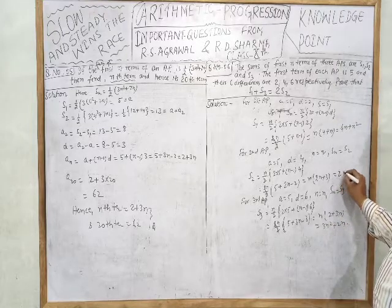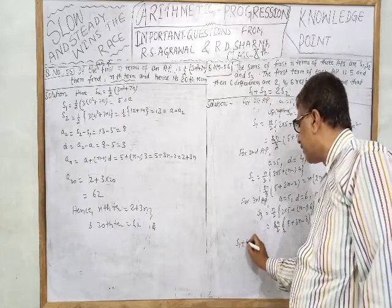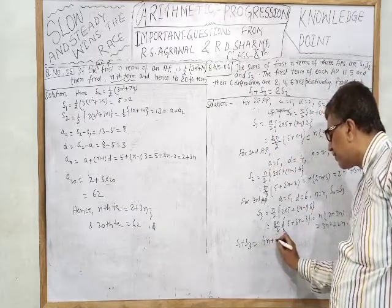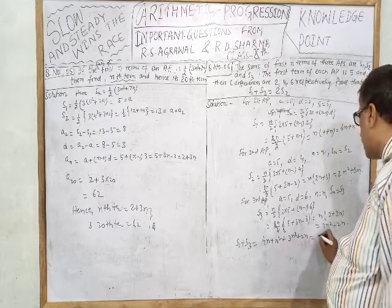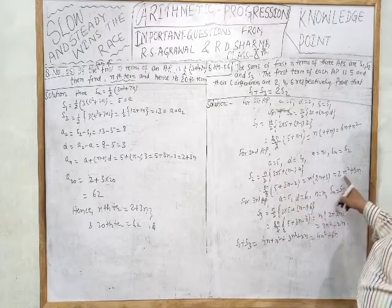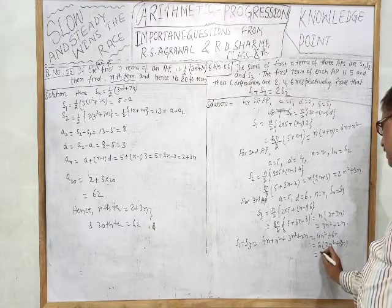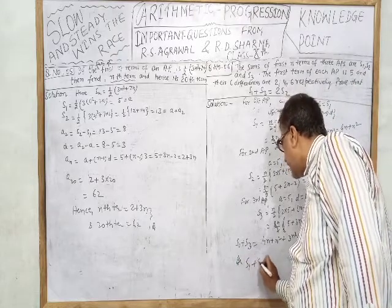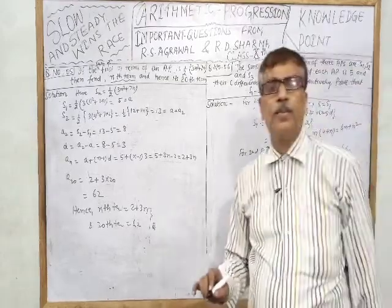So S1 + S3 = 4n² + 6n and 2×S2 = 2(2n² + 3n) = 4n² + 6n. Therefore S1 + S3 = 2S2, which is what we had to prove. In this video I have covered 6 questions on the sum of arithmetic progression and demonstrated step-by-step solutions.